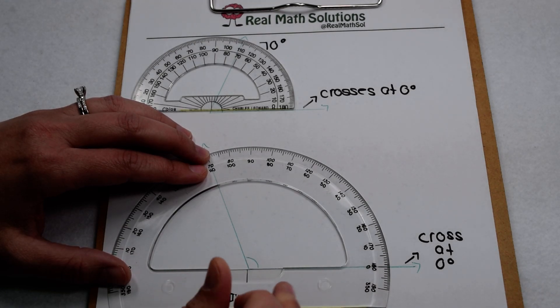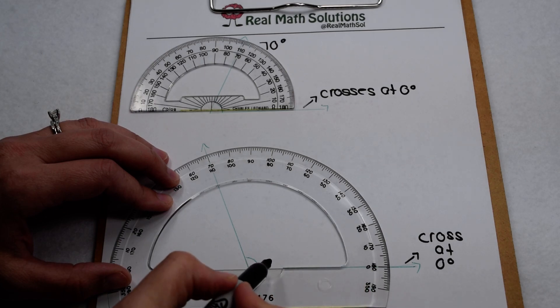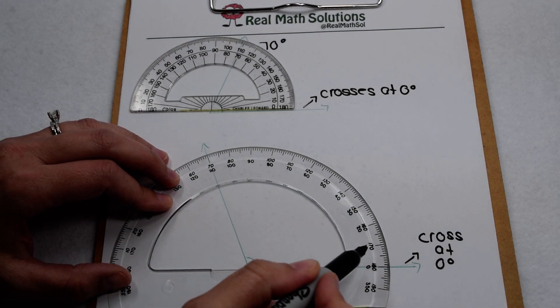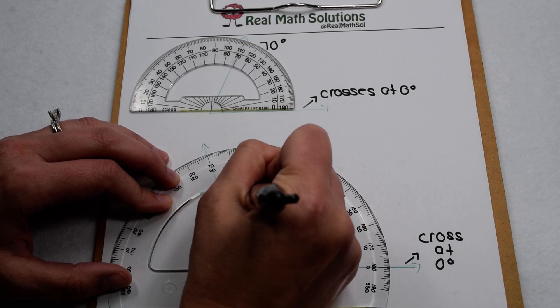This cross here is going to point to where our vertex goes. Our base ray is going to line up here along the inside of our protractor. Now we can see we have an obtuse angle here, so we can come around and read, and this angle is worth 110 degrees.